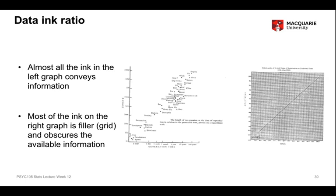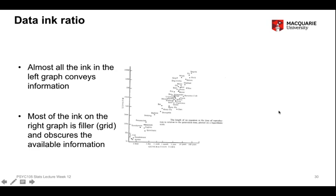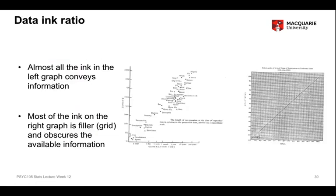In contrast, this second graph perhaps actually conveys less objective information and does so in a much less clear fashion. What's happened here is that fine grid lines and background shading have been added, probably to help guide the eye and provide some contrast. But in fact they lose contrast, because these little dark black dots merge with the background too much, and the background itself conveys no information at all.